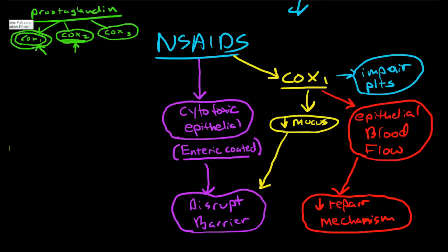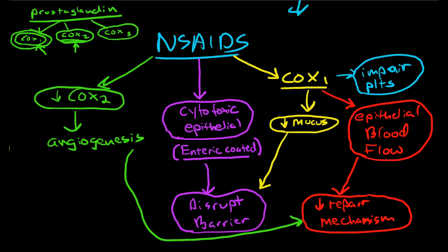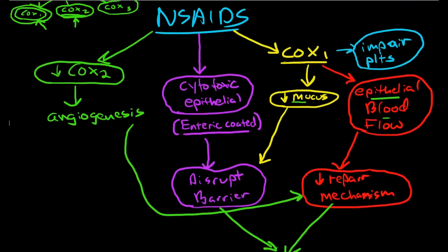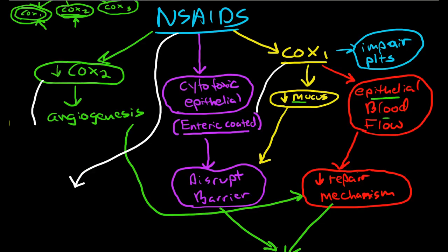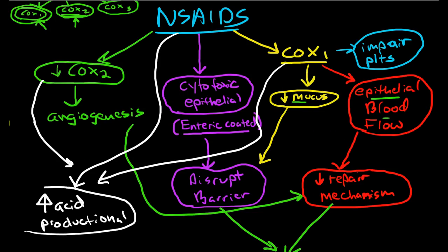There are also some COX-2 effects: if we inhibit COX-2, we have significantly reduced angiogenesis, which again reduces the repair mechanism. Lastly, NSAIDs — via both COX-1 and COX-2 — suppress prostaglandin's ability to decrease acid production, so NSAIDs end up causing increased acid production. However, this is not considered the essential component of mucosal injury with NSAID use.